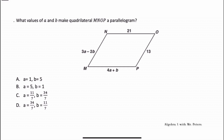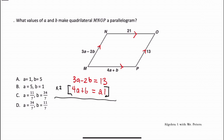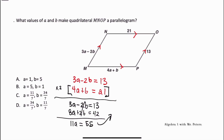Looking at this parallelogram, they're asking us to identify the values of A and B. We need to understand that opposite sides are congruent in parallelograms, so we create equations: 3A - 2B = 13 and 4A + B = 21. To solve this system, we'll use elimination — multiply the second equation by 2 to cancel out the B's. That gives us 8A + 2B = 42. Adding the equations, the B's cancel and we get 11A = 55.